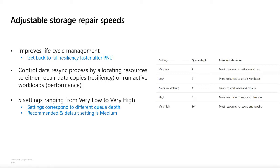There are five settings ranging from very low to very high. Very low and low correspond to queue depths of one and two, meaning most resources go to active workloads. High and very high mean most resources go toward resync and repairs. The recommended and default setting is medium, which corresponds to a queue depth of four — a balance of workloads and repairs. We recommend setting this back to medium after use.